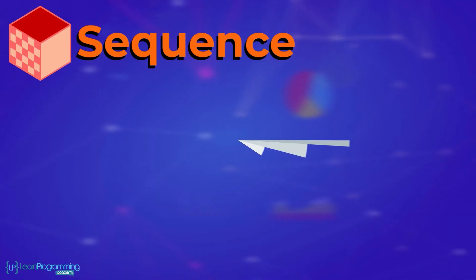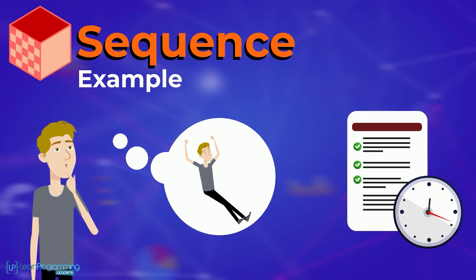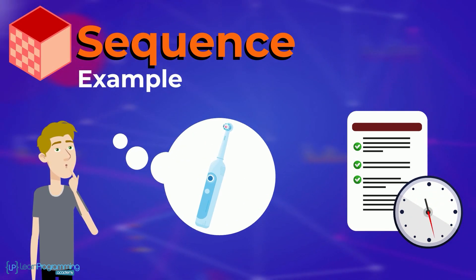The first building block is sequence. For example, sequence can be a list of things you do every day in order. Wake up, get out of bed, brush your teeth, put on your clothes, etc.